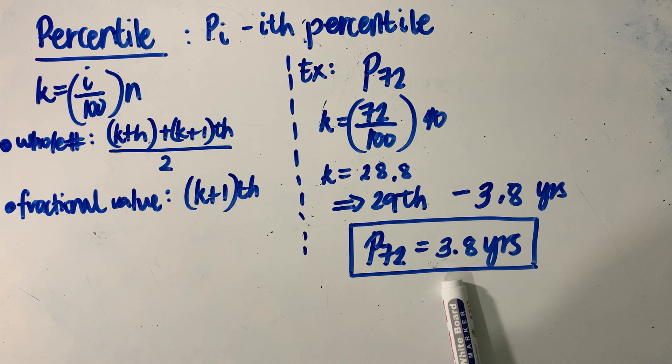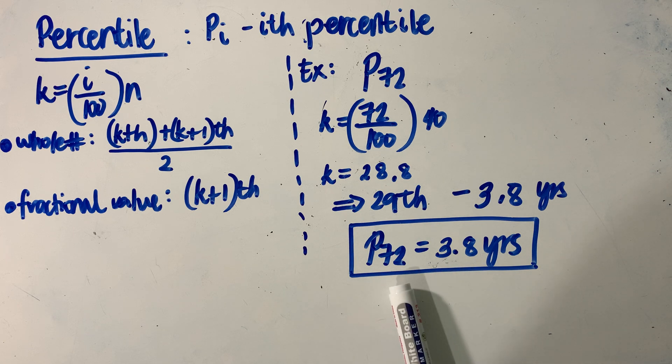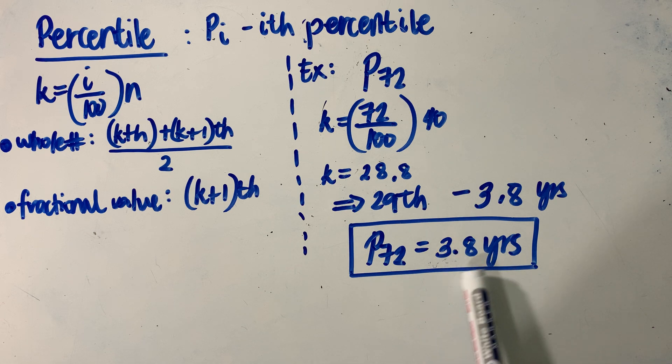We are referring to the percentage of our data values in the observation that would fall below the indicated value we have determined. Or we may give the corresponding percent that would fall above the computed value we have determined.